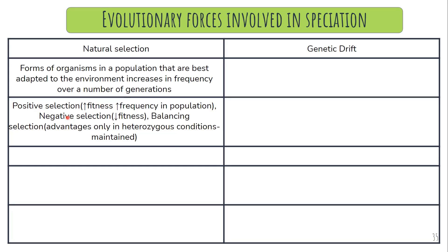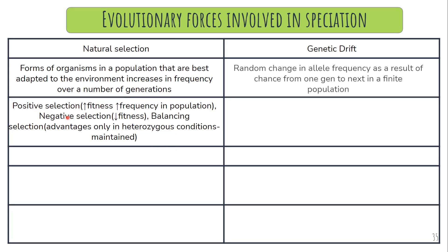Genetic drift refers to random changes in allele frequency as a result of chance, from one generation to another. For example, there were 10 alleles for black and 5 alleles for white; in the next generation, randomly this number became 7 and 3. This change in allele frequency happening randomly in a finite population is called genetic drift.